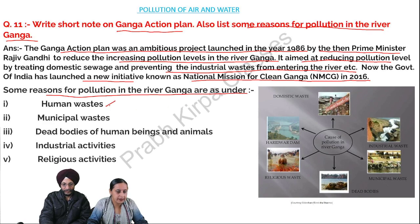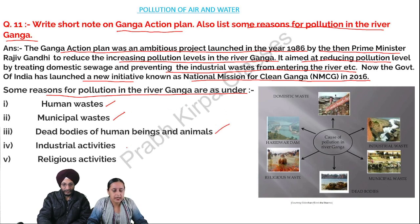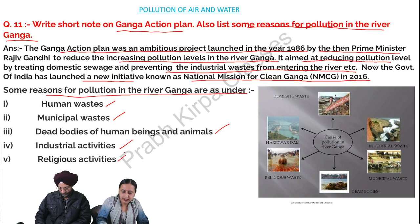Number 1: human wastes. Number 2: municipal wastes. Number 3: dead bodies of human beings and animals. Number 4: industrial activities. Number 5: religious activities.